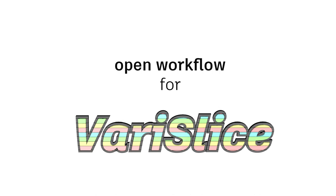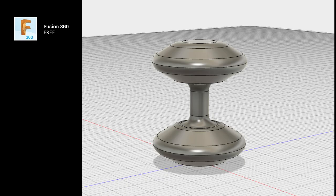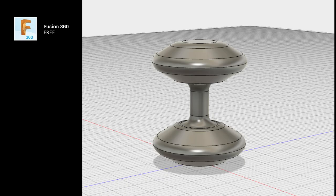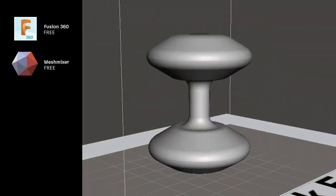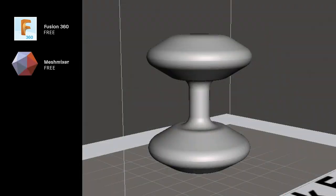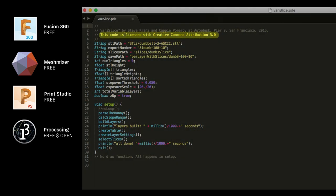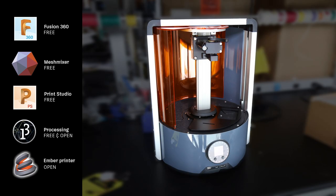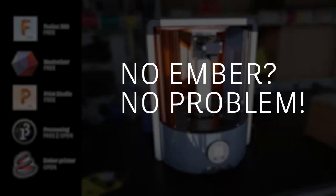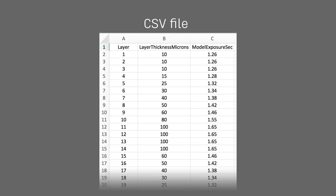So if you want to use VeriSlice, here's what you gotta do. First, create a model in Fusion 360, which is free for students. Import the STL into MeshMixer, which is free. Slice it in Print Studio, which is also free. Next, use the processing script we wrote, which is open and free. Then send it to an Ember printer, which is open. If you don't have an Ember printer, that's okay. The processing script outputs a CSV table, which you can adapt for your own 3D printer. Check out the details in the instructable linked in the description.